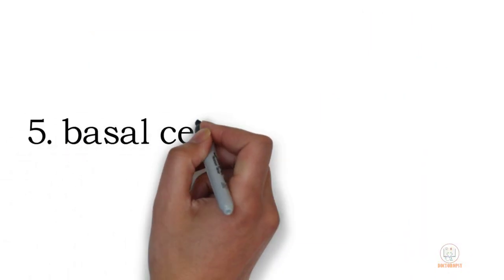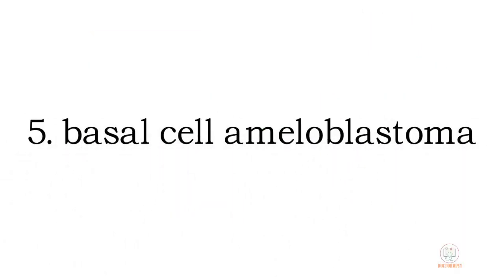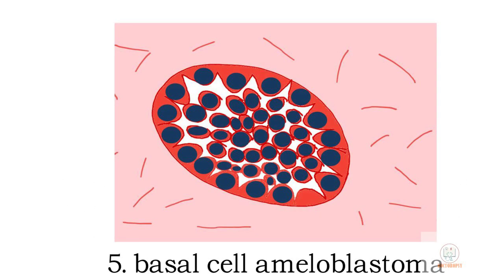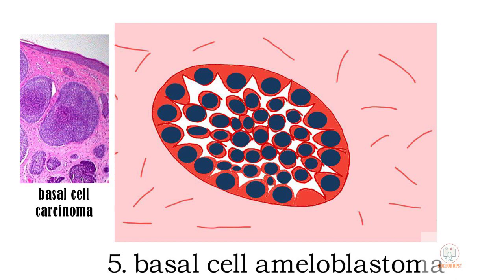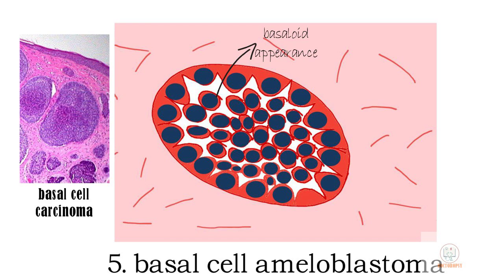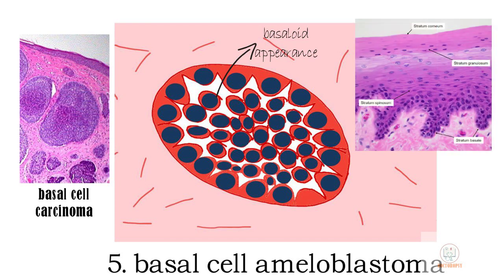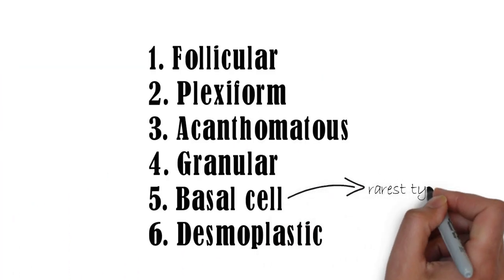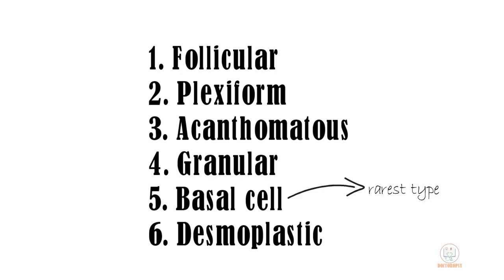The fifth type, the basal cell ameloblastoma, shows epithelial tumor islands with considerable resemblance to the tumor islands of basal cell carcinoma of the skin. The tumor cells have a basaloid appearance — that is, scanty cytoplasm and a large basophilic nucleus — similar to the cells of the stratum basale of surface epithelium. It is believed that this is the rarest histological subtype of ameloblastoma.